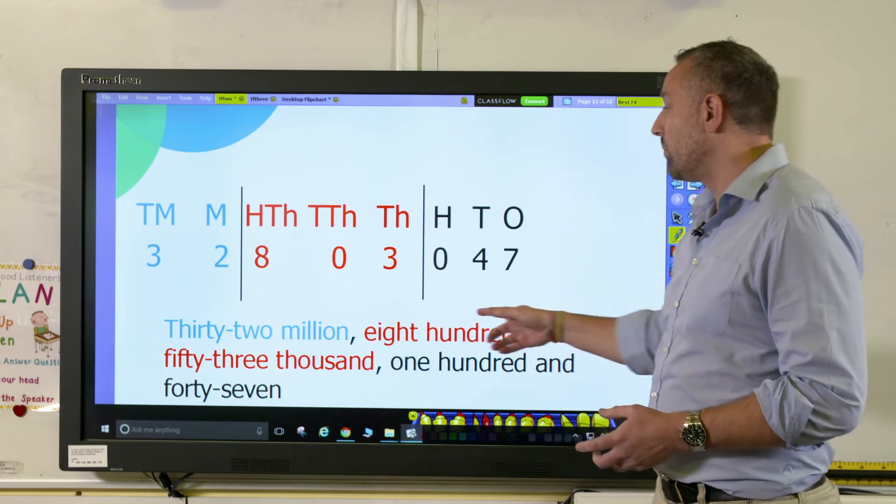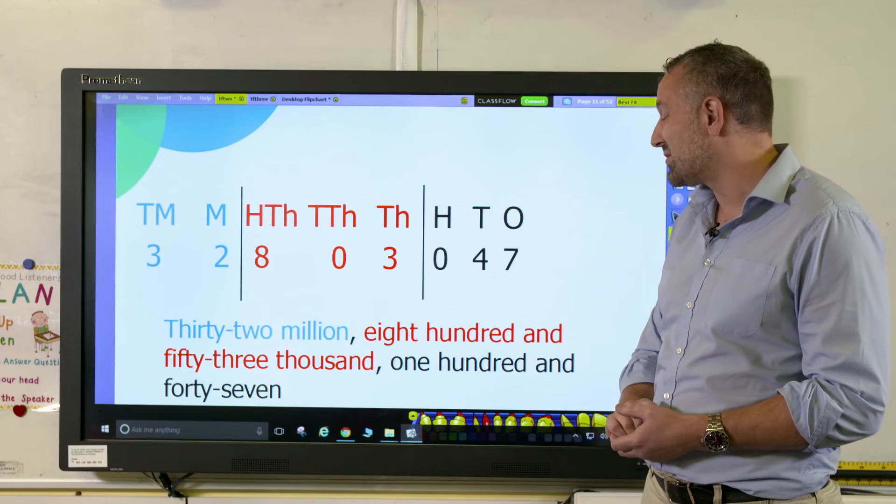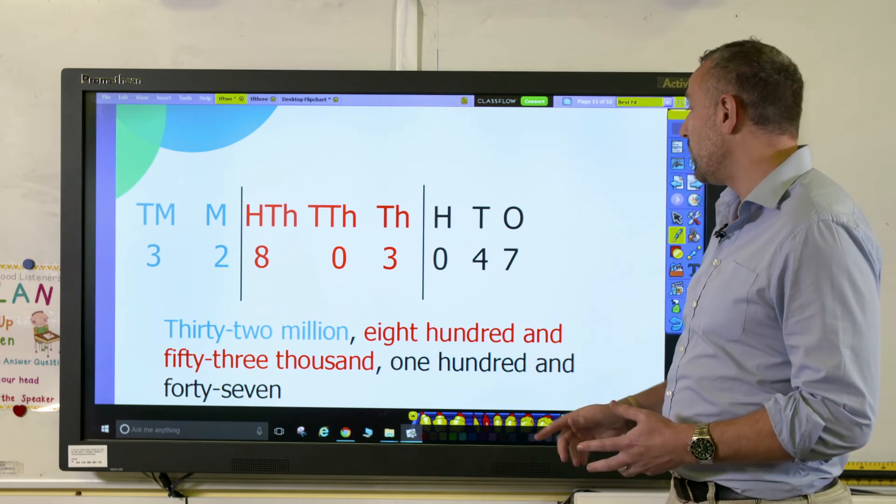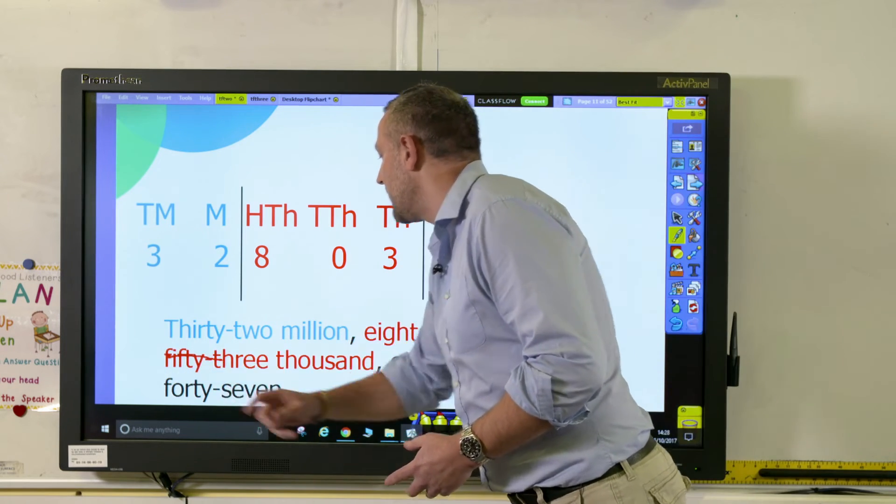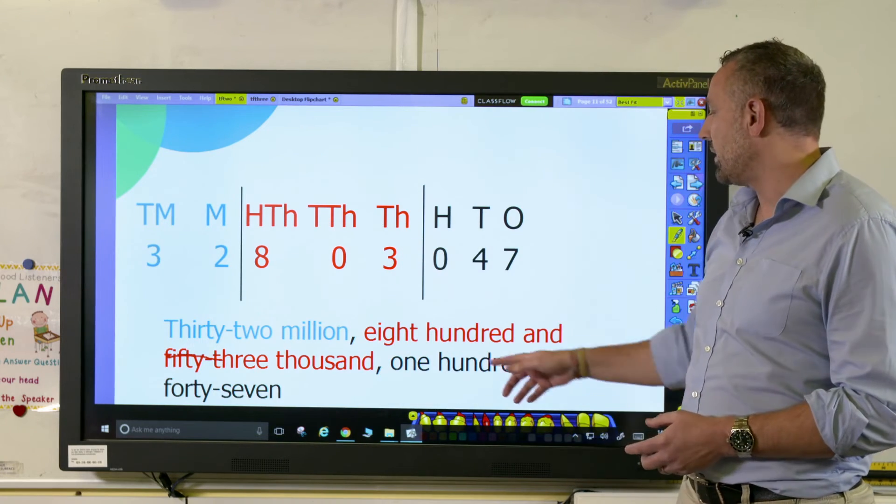So now we've got, instead of 32,853,147, we get rid of the 53—50 thousand—so it now just becomes 3,000, and it's no longer 147, it's just 47.